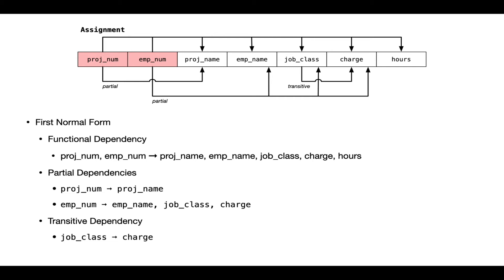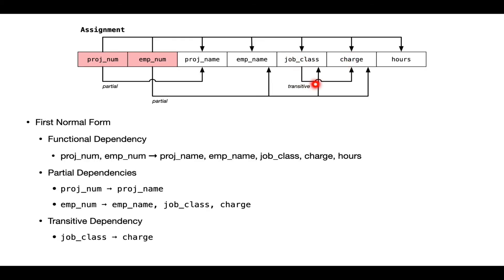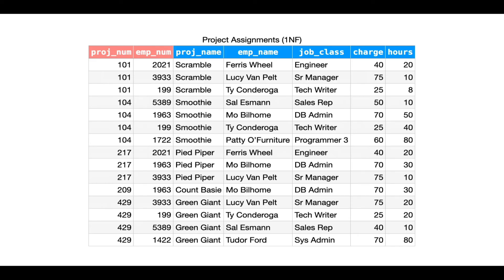Finally, I've got a transitive dependency. By the definition from this author, these are functional dependencies among non-prime attributes. Both job class and charge associated with this transitive dependency are not prime attributes — they're not part of any key. We can intuit that for a given job class, this level within the organization, an engineer is being billed at 40 dollars an hour. That's consistent throughout this table. The charges are always consistent with the job class, so it's not tied to the employee as such — it's tied to the job class.